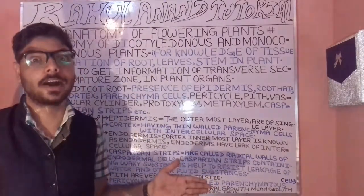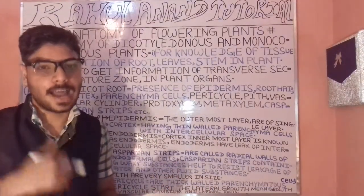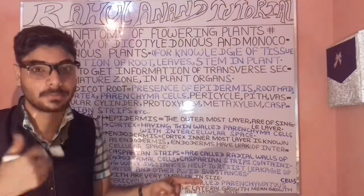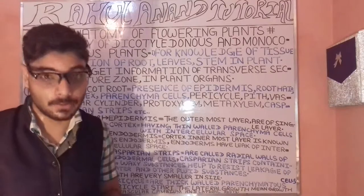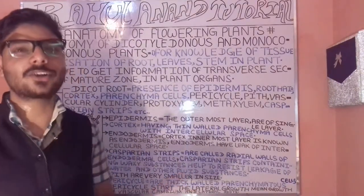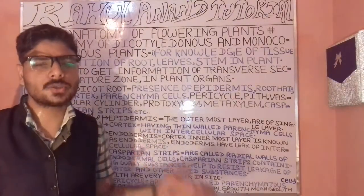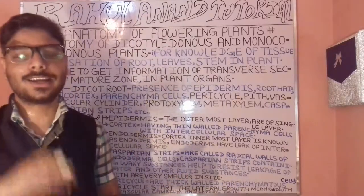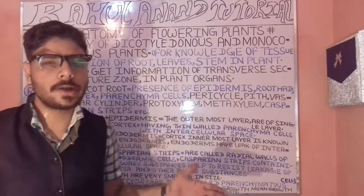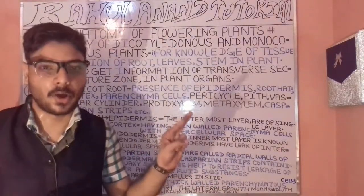We have different types of cambium — vascular cambium and lateral cambium. Vascular cambium is particularly containing bark-like structures and bark. Lateral cambium will be particularly having xylem as well as phloem.